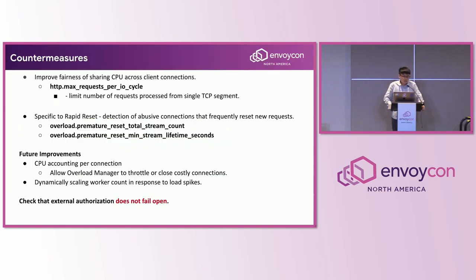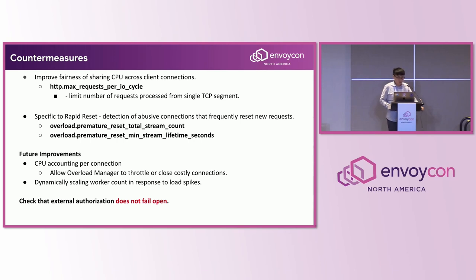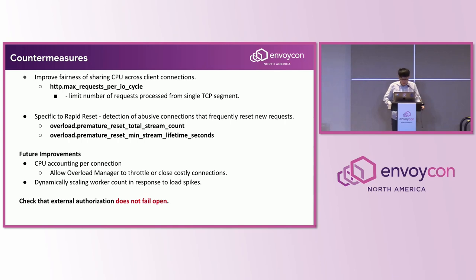So here we introduce several mitigations in Envoy. The first one is max requests per IO cycle. As we mentioned, the attacker can create much more concurrent streams. This will limit the number of requests processed from a single TCP segment, just to improve the fairness of CPU usage among all client connections. This may require tuning for your traffic if you want to set a default value, and I will talk more about this configuration later.